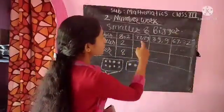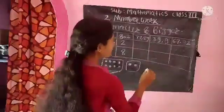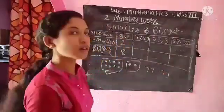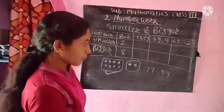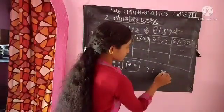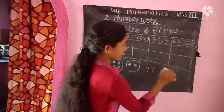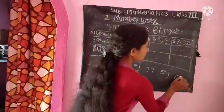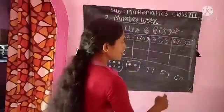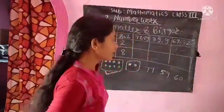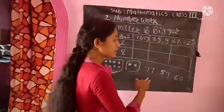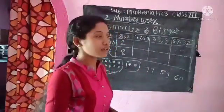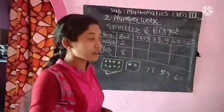There is 77 and 59. So, from 59 we get 60. Then after 60 we add 10, then we get 70, and 70 plus 7 — if we add 7, then we get 77.